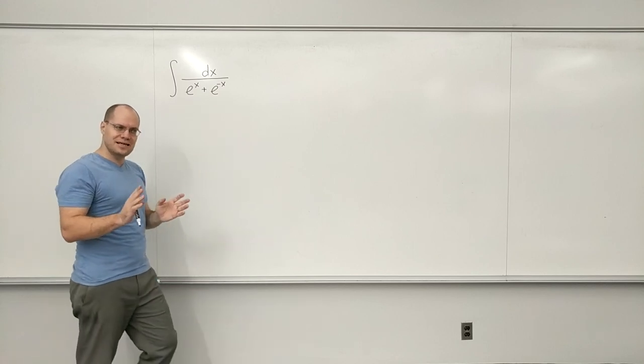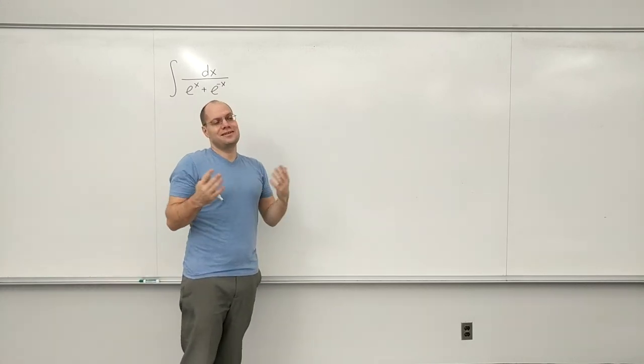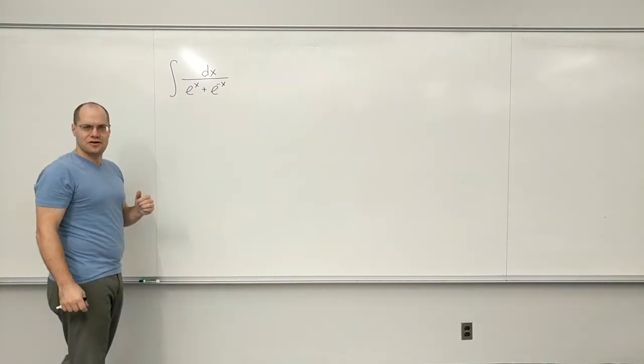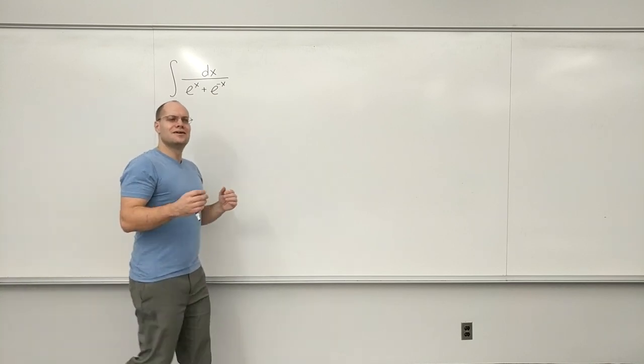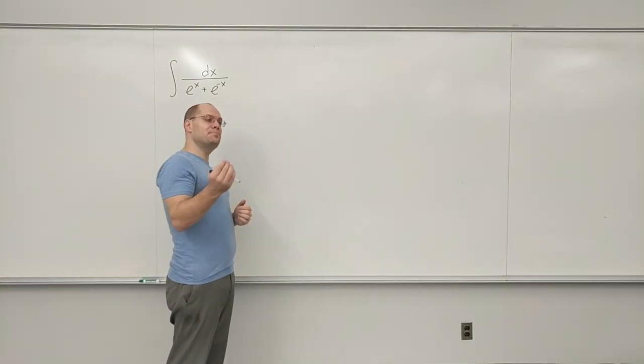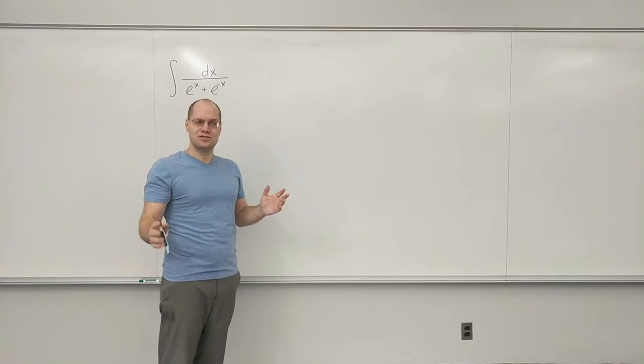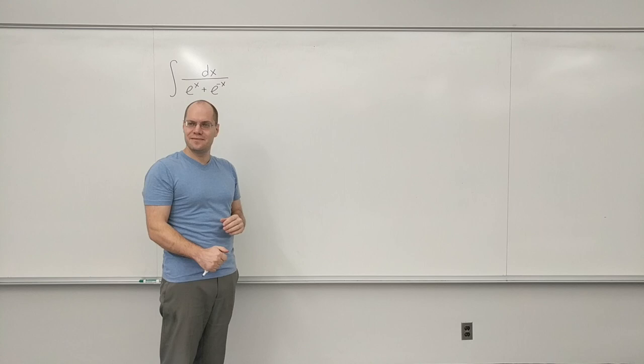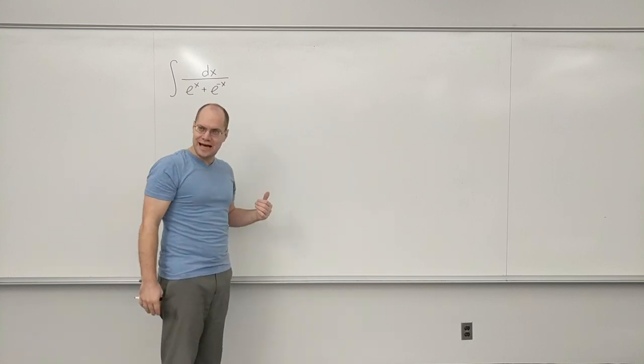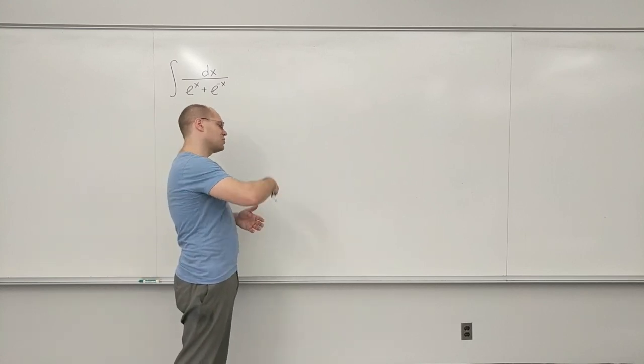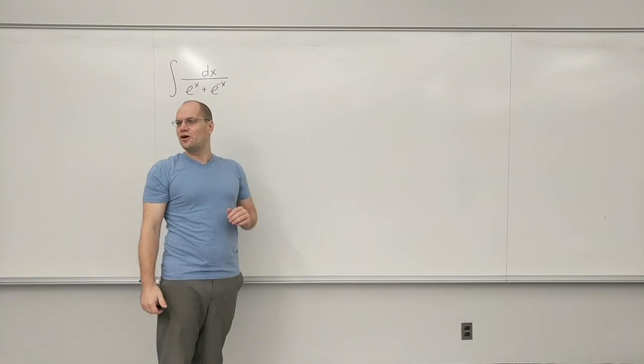Okay, but the nice thing about e to the x, well, there's nothing special about e to the x here. You can always achieve what you need simply by putting it in there and then making up for it. We've done it a bunch of times. Would it plus 1 and minus 1? Would it times 2 and times 1 half? We've done divided by square root of x and multiplied by square root of x. We've done all of those things, right?